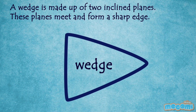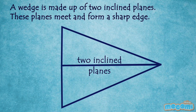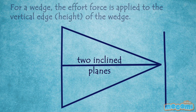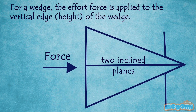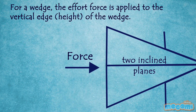A wedge is made up of two inclined planes. These planes meet and form a sharp edge. For a wedge, the effort force is applied to the vertical edge of the wedge.